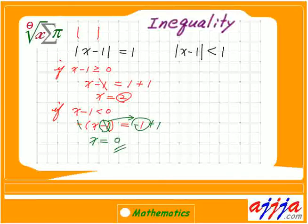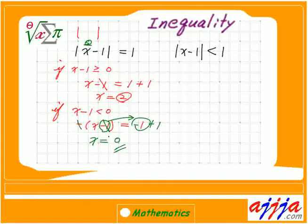Now let's plug in. Let's try x equals 2: 2 minus 1 is 1, and the absolute value of 1 is 1. That's right. What about x equals 0: 0 minus 1 is negative 1, and negative 1 times negative 1 is 1. Both answers are acceptable — x equals 0 or x equals 2.